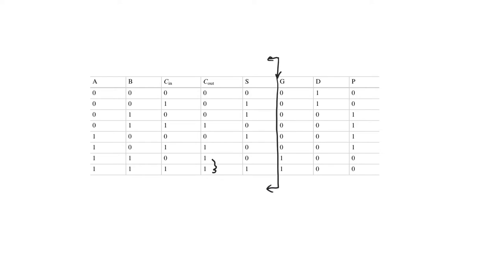These bits represent the state of the carry out. In the last two rows of the truth table, carry out equals one whether carry in is zero or one. This means the full adder is generating a carry out — producing a one at carry out regardless of the value of carry in — so we assert the generate bit G.